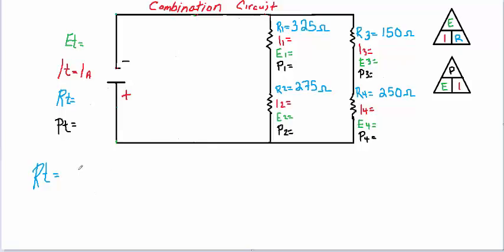So our RT equation would be R1 plus R2 is in parallel with R3 plus R4. So if we just put in the values here, R1 plus R2, we've got 600 ohms, and that is in parallel with R3 and R4 together, is 400 ohms, so we've got 600 in parallel with 400.